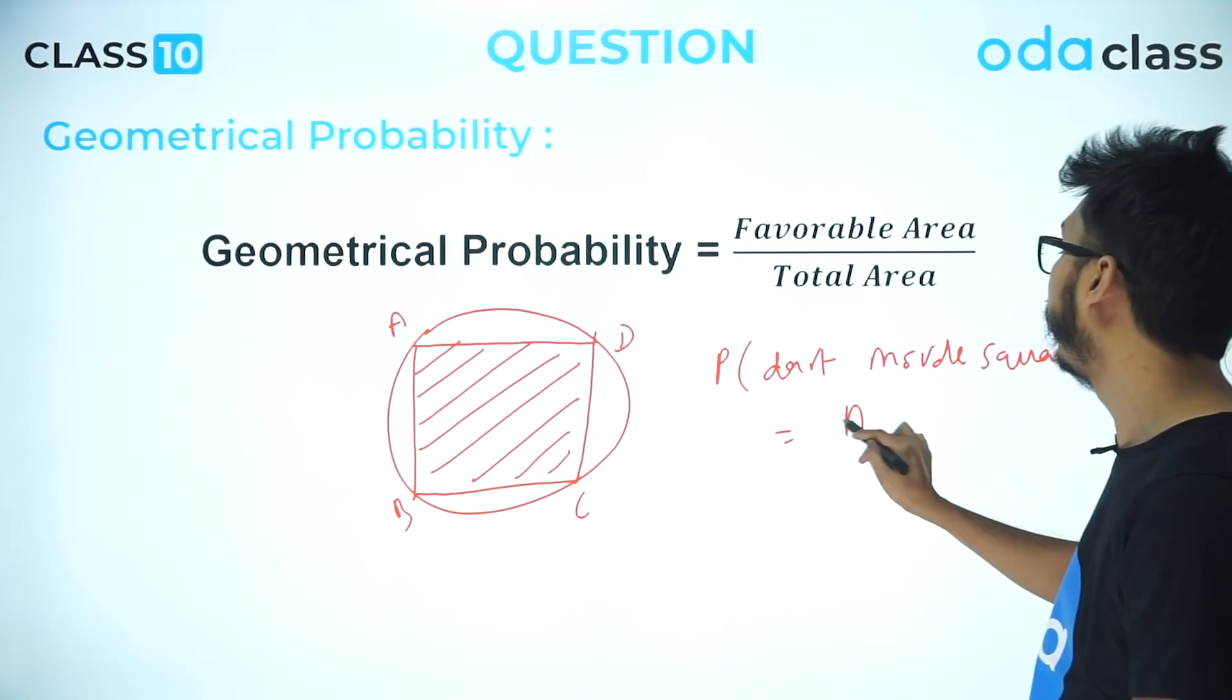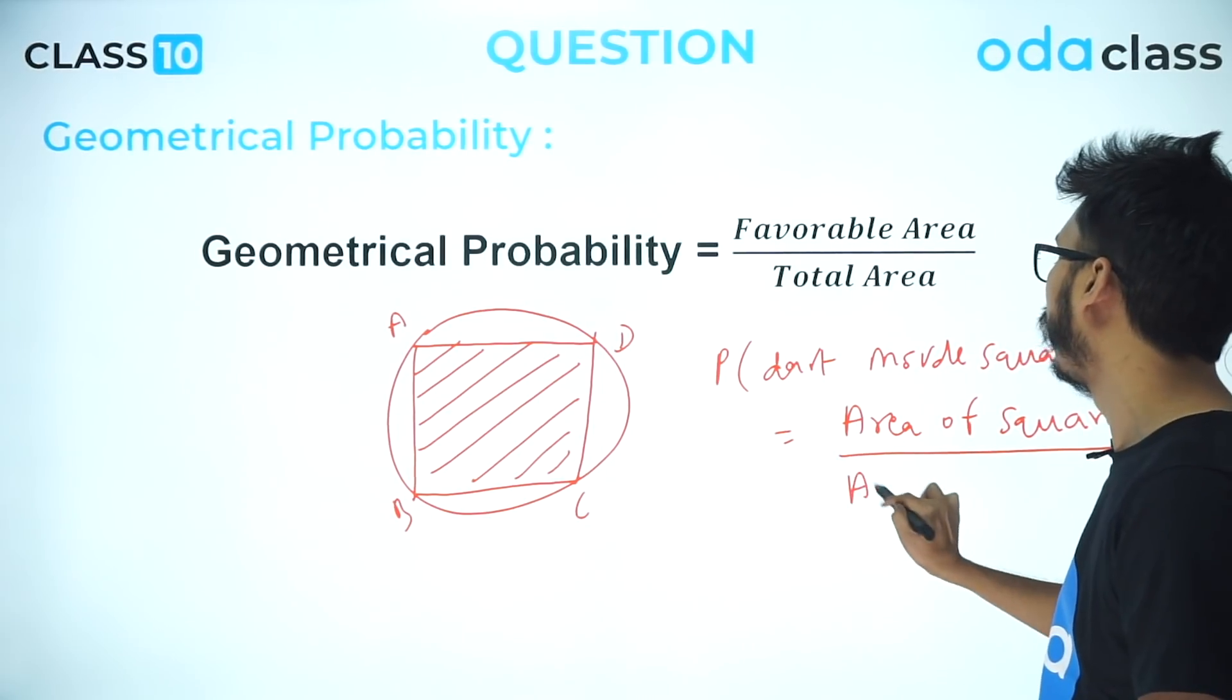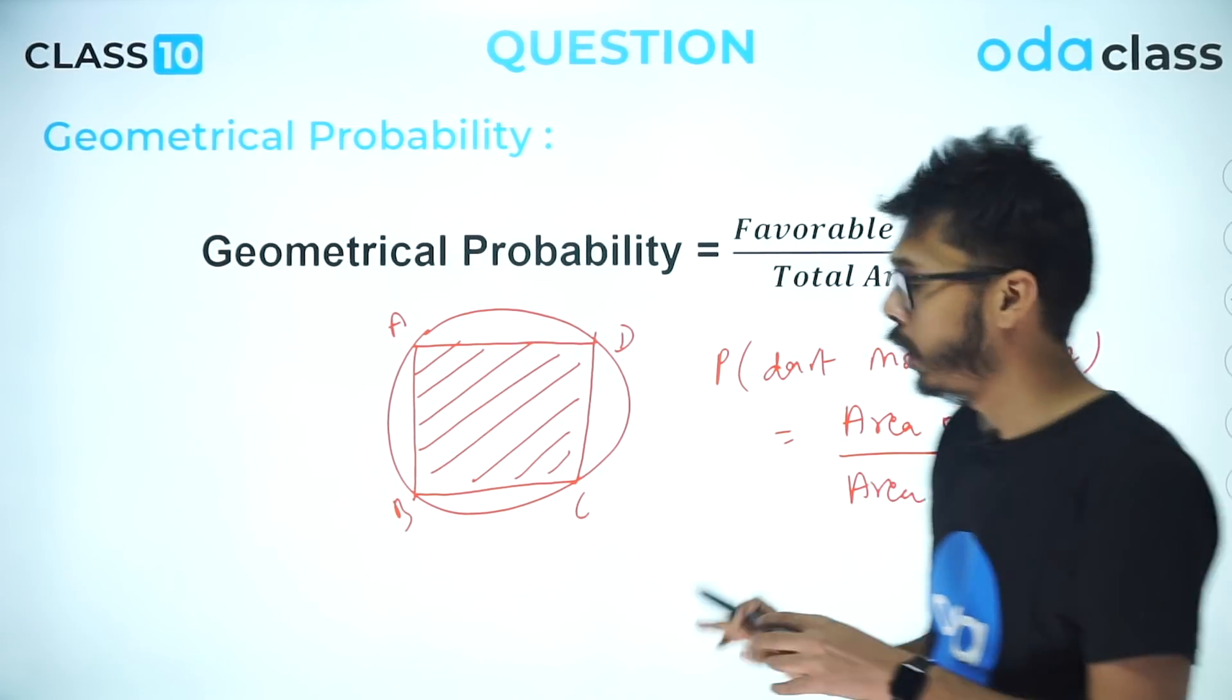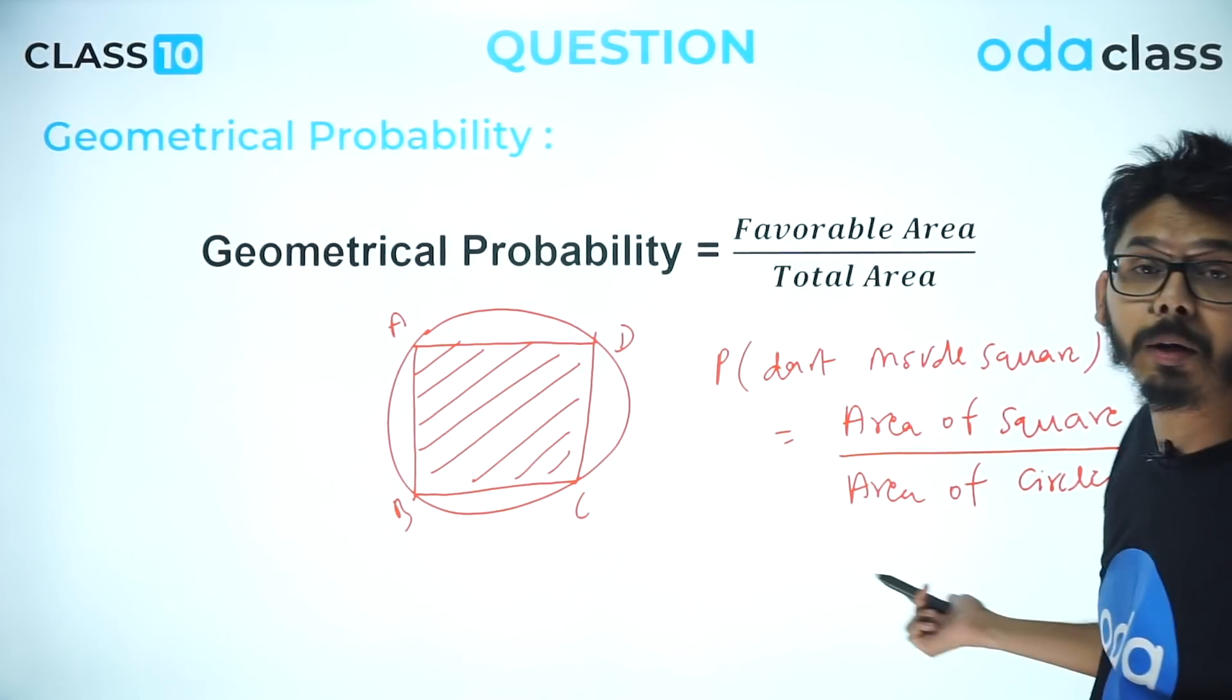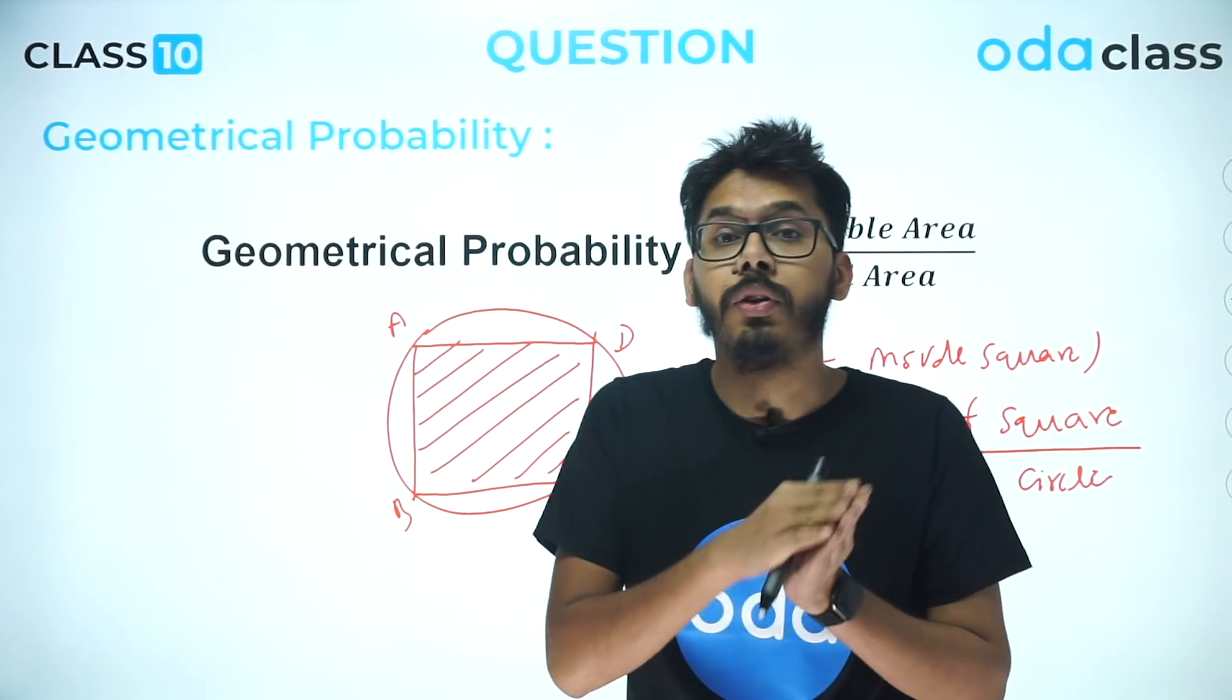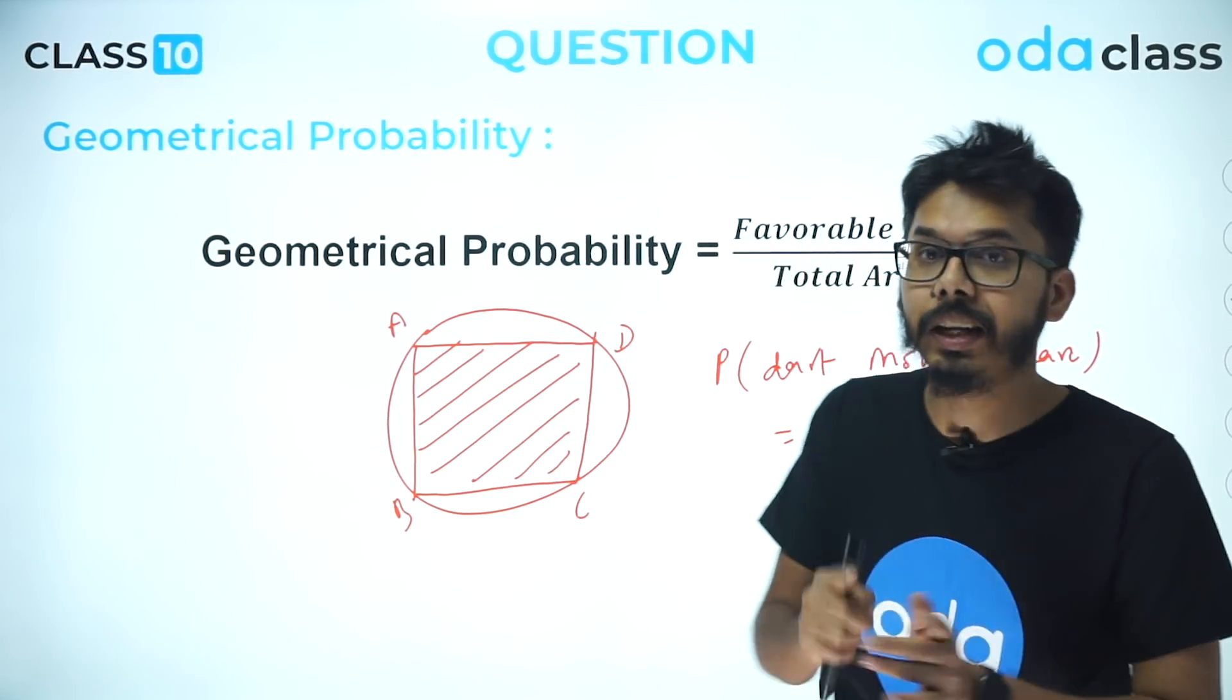You can write area of square divided by area of circle, because area of square is actually the desired area which we are looking for. So if you are looking for probability of the dart landing inside this square, then it will be area of square divided by area of circle. These kinds of questions you can always expect, and they will come either for three marks or four marks depending on the difficulty level of the question.